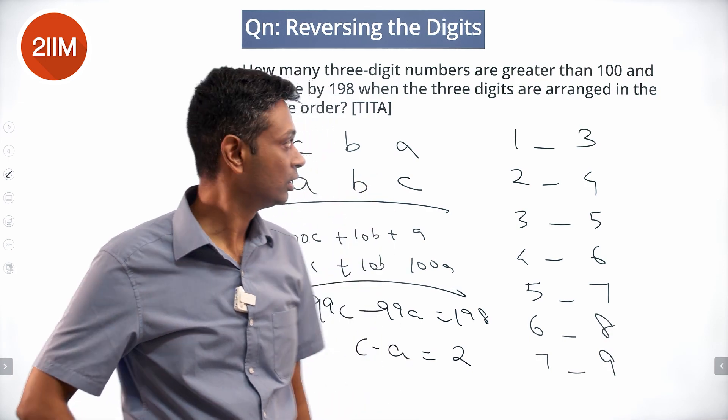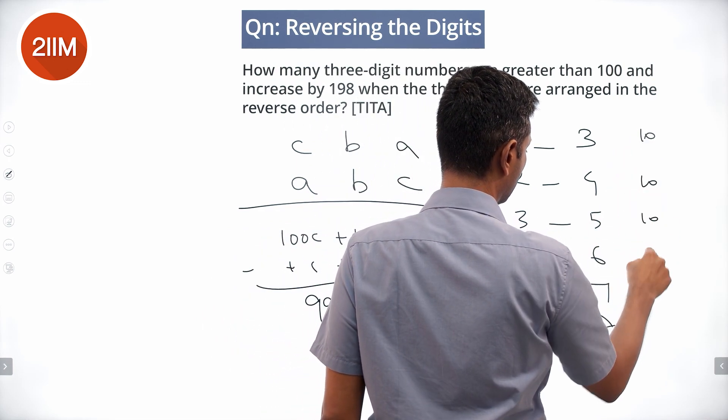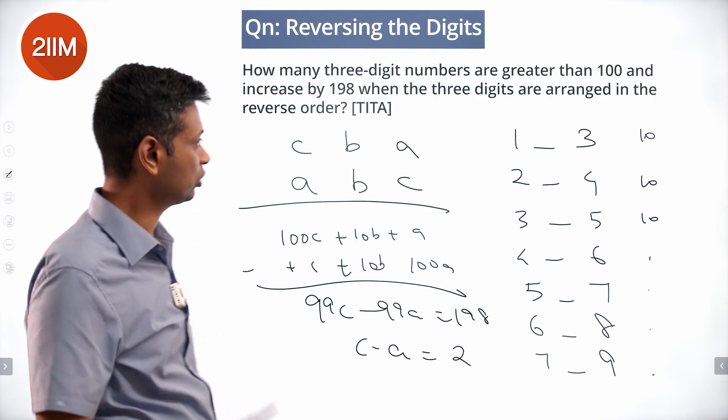10 numbers for each pattern - seven patterns total - that's 70 different numbers possible.